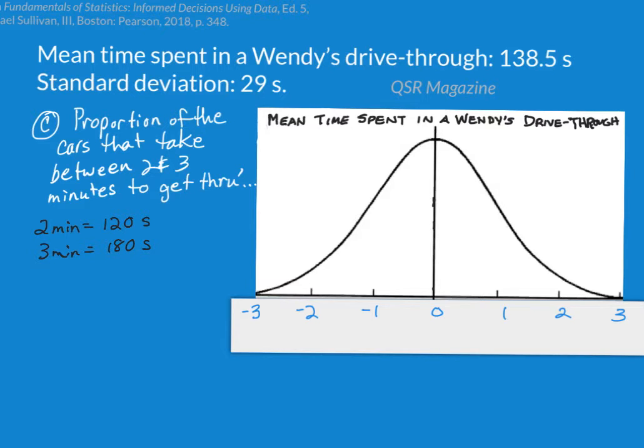And those are going to show up someplace on this standard normal distribution after I find their z-scores. So let's find the z-score first for the 120 seconds. Z-score for 120 is 120 minus 138.5, because that's the mean given up here in the original problem, divided by the standard deviation, also given as original information. And that number is negative 0.637931. But remember, our chart only goes to two decimal places, so our z-score will be negative 0.64.